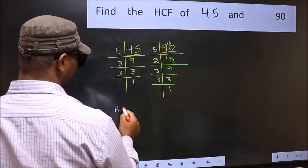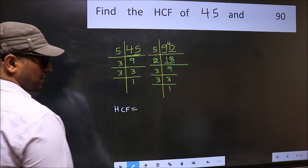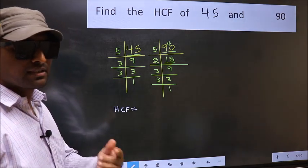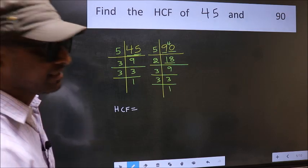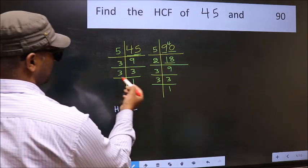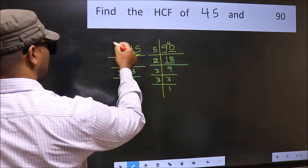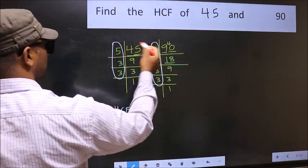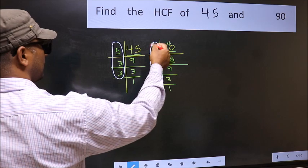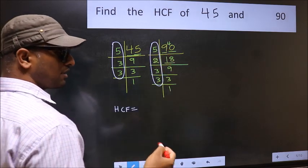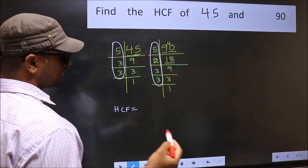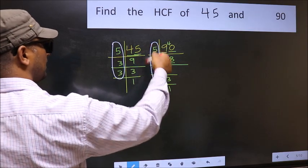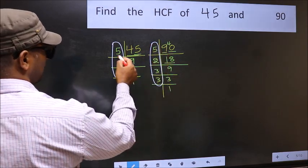Therefore, our HCF is the product of the numbers which are present in both factorizations — that is, the factors common to both 45 and 90. Let us find the numbers present in both. Starting with the number 5.